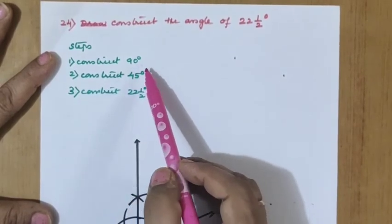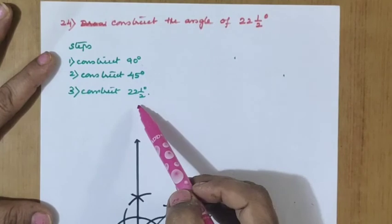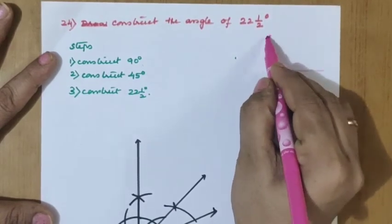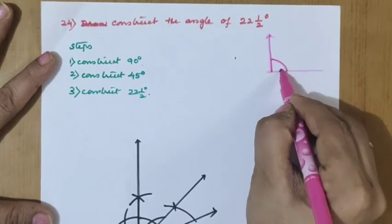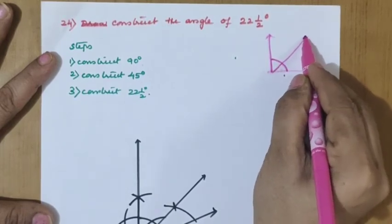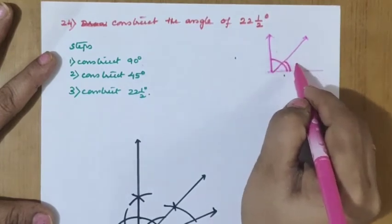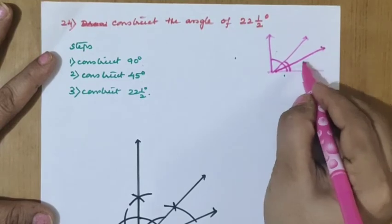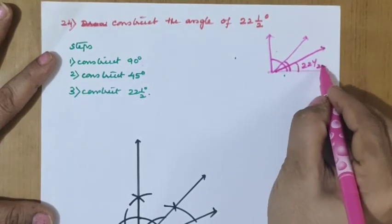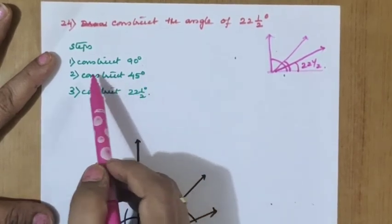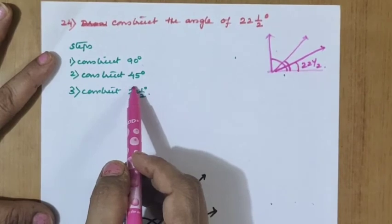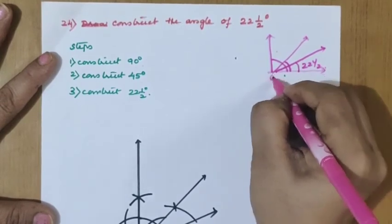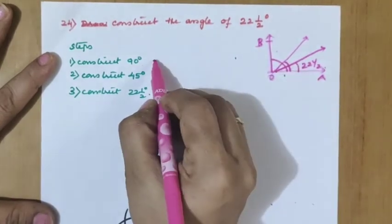Looking at the rough diagram: first construct 90°. Using the bisecting property, 90° is bisected to get 45°. Then one more bisection gives 22.5°. The steps of construction are: construct 90° (angle AOB = 90°), then construct 45° (angle AOC = 45°), then construct 22.5° (angle AOD = 22.5°).